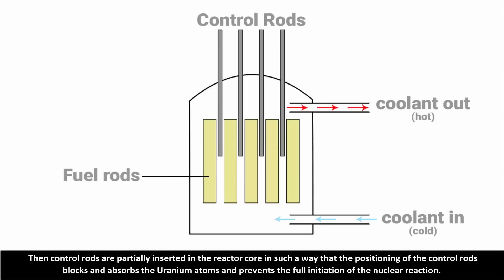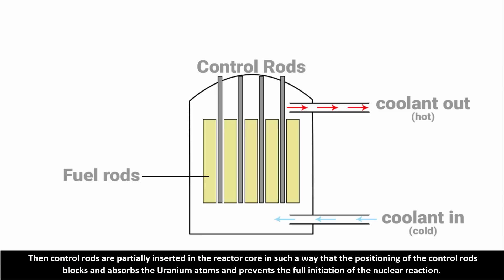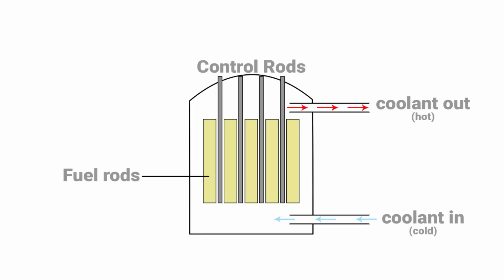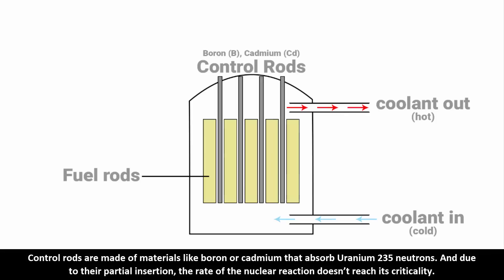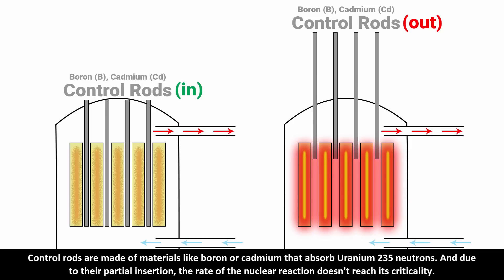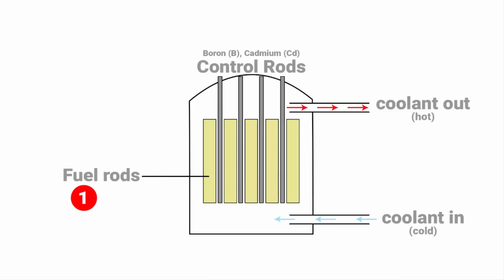Then control rods are partially inserted in the reactor core in such a way that the positioning of the control rods blocks and absorbs the uranium atoms and prevents the full initiation of the nuclear reaction. Because the control rods are made up of materials like boron or cadmium that absorb uranium-235 neutrons. And due to their partial insertion, the rate of the nuclear reaction doesn't reach its criticality. So the first step was loading the fuel, then control rod positioning.